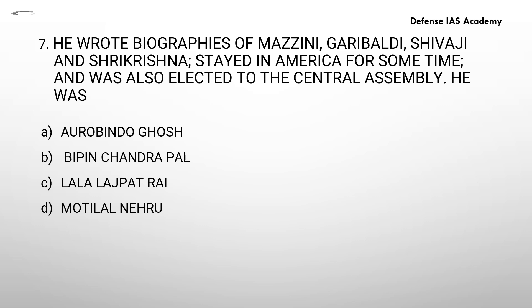Question number 7: he wrote biographies of Mazzini, Garibaldi, Shivaji and Sri Krishna. He stayed in America for some time and was also elected to the Central Assembly. He was — Option A: Arabindo Ghosh. Option B: Bipin Chandra Pal. Option C: Lala Lajpat Rai. Option D: Motilal Nehru. The answer is Lala Lajpat Rai.